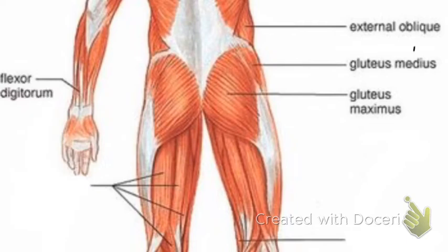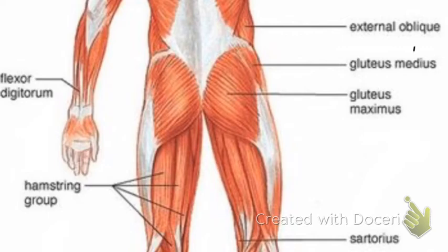Flexor digitorum flexes your fingers so they move into your palm. The hamstring group is a flexor — it is pulling your lower leg closer to your upper leg, which helps with stride, running, and similar movements. Sartorius is seen again; it attaches in the back so that it helps you with leg rotation when you move your leg in and out.